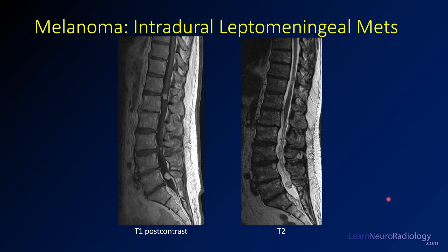This case is an example of intradural leptomeningeal metastases from melanoma. On post-contrast T2-weighted images, you see nodules along the conus that enhance pretty avidly. There are multiple lesions — any time you see multiple intradural extramedullary lesions, metastases are going to be on your differential. Melanoma is relatively frequent, so you can definitely think about that.